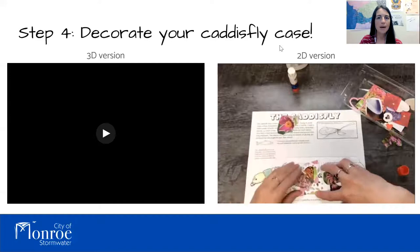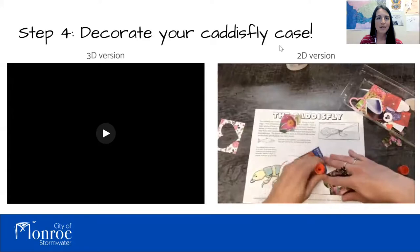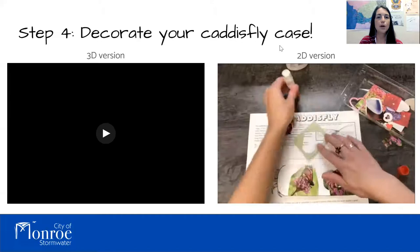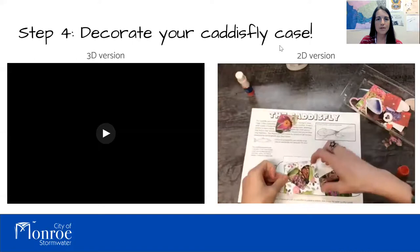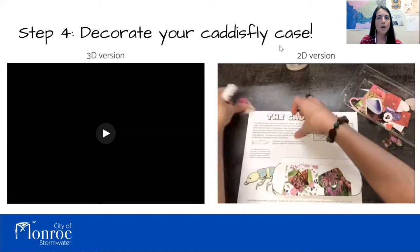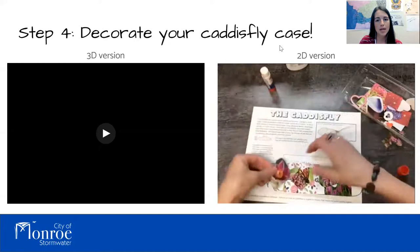Let's break that down: macroinvertebrates. Macro means large enough to see with your eye, so you don't need a microscope. Invertebrate means they don't have a backbone. In freshwater streams, this commonly includes many larval or nymph stages of insects, as well as some aquatic invertebrates that live their entire lives in the stream, like clams, mussels, snails, and crayfish.